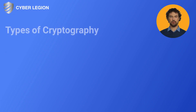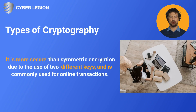In modern cryptography, there are two main types of encryption: symmetric and asymmetric. Symmetric encryption uses the same key for both encryption and decryption, meaning that the sender and receiver need to know the same key.